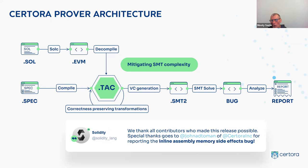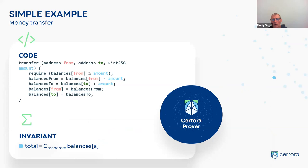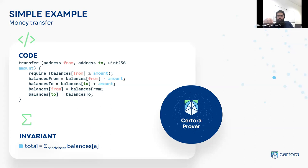Let's start with a very simple example — a hello world. The simplest example: you are transferring a balance from one account to another, and the invariant we want to maintain is that the total is equal to the sum of the balances. Even in this very simple case, the invariant could be broken. Does anyone want to guess? Of course — you are not subtracting the balance correctly. In the second-to-last line it's never subtracted. But intuitively, if you were asked before using the tool, you might say it's okay.